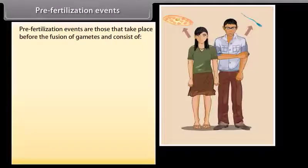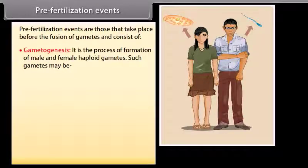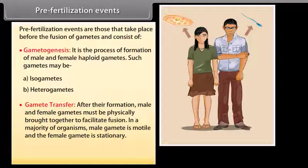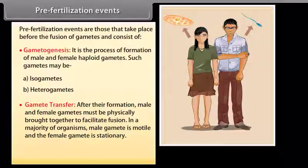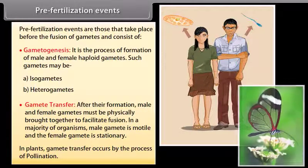Pre-fertilization events are those that take place before the fusion of gametes and consist of gametogenesis — the process of formation of male and female haploid gametes. Such gametes may be isogametes or heterogametes. After their formation, male and female gametes must be physically brought together to facilitate fusion. In a majority of organisms, the male gamete is motile and the female gamete is stationary. In plants, gamete transfer occurs by the process of pollination.